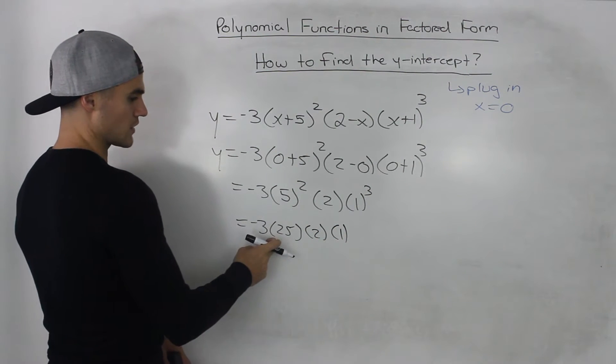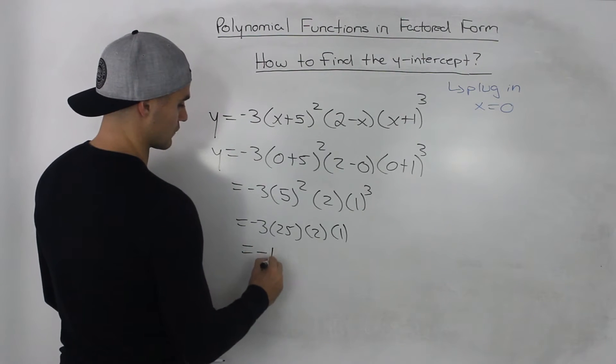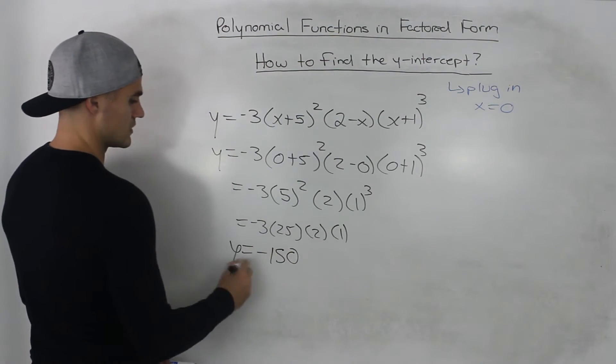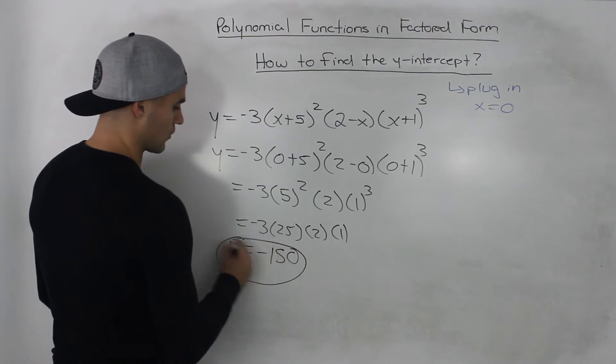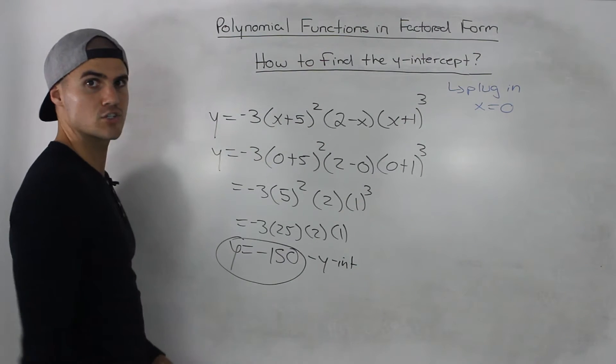Negative 3 times 25 is negative 75. Negative 75 times 2 is negative 150. So that there is our y-intercept for this polynomial function.